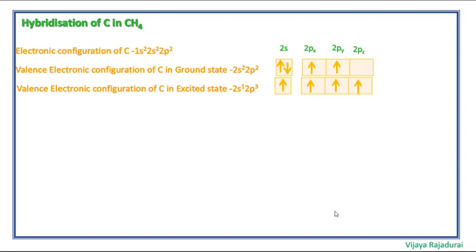After the excitation of carbon, its electronic configuration is 2s1, 2p3. Now, it has 4 unpaired electrons. These orbitals are different shapes and different energies.